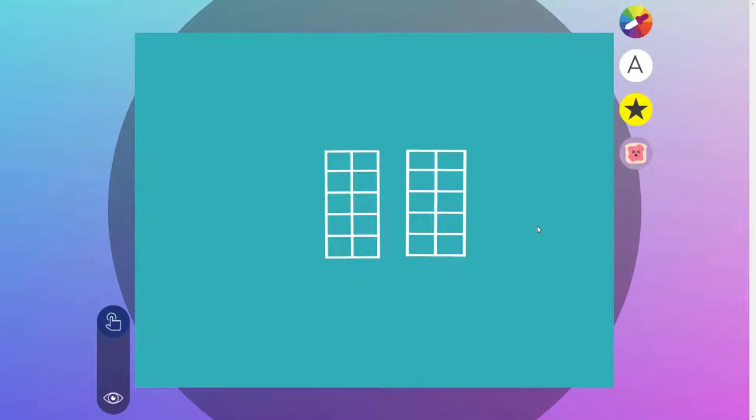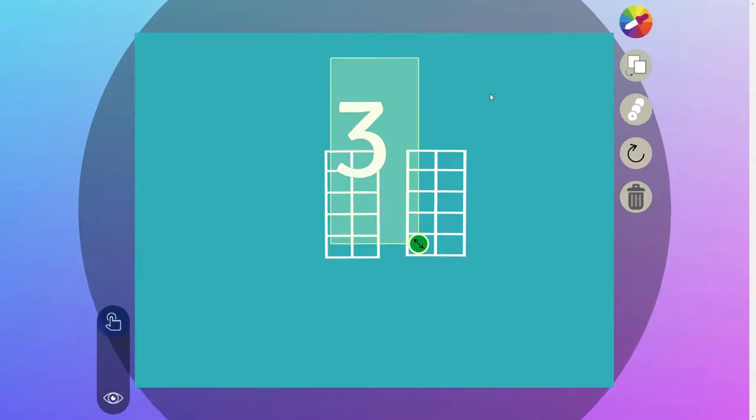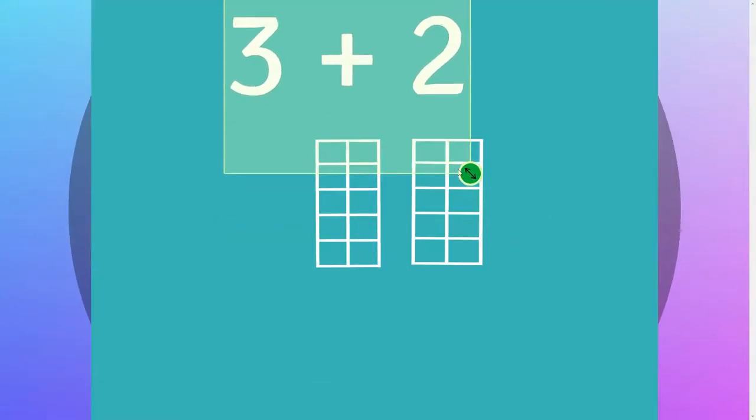Now we're going to populate these buildings with emojis. For this activity, we need two numbers to add together. Your teacher will give you two numbers to use based on your grade level and whatever you happen to be working on currently. Right now, I'm working with three and two.